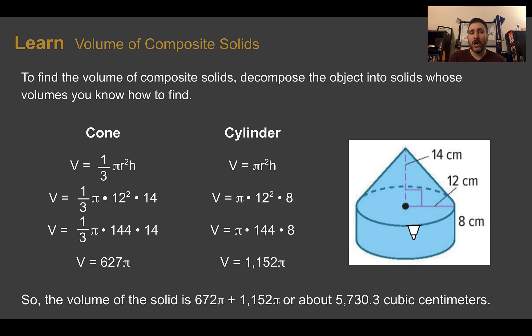So in this picture here, we have a cone and a cylinder. Using the given dimensions, I can see that the volume of the cone, using our formula for our cone, going through, the volume was 627π. Doing the same for the cylinder, I use my cylinder formula, plug in my values, the volume is 1152π.